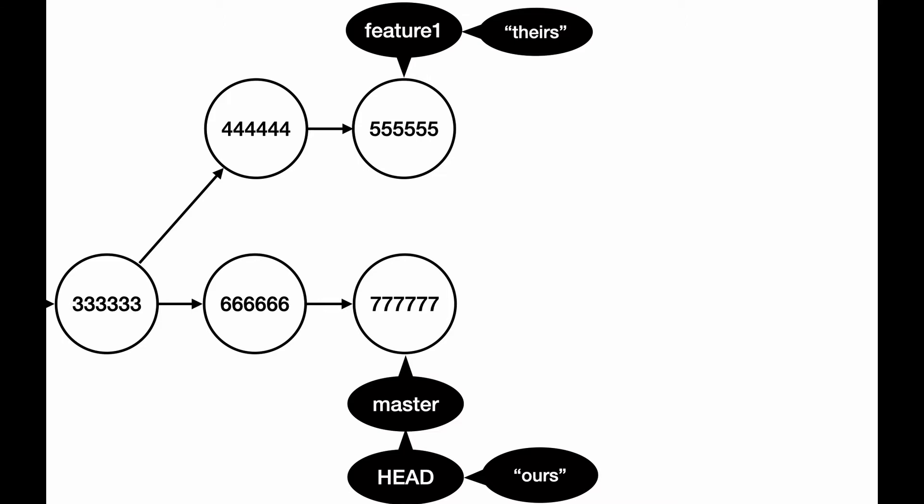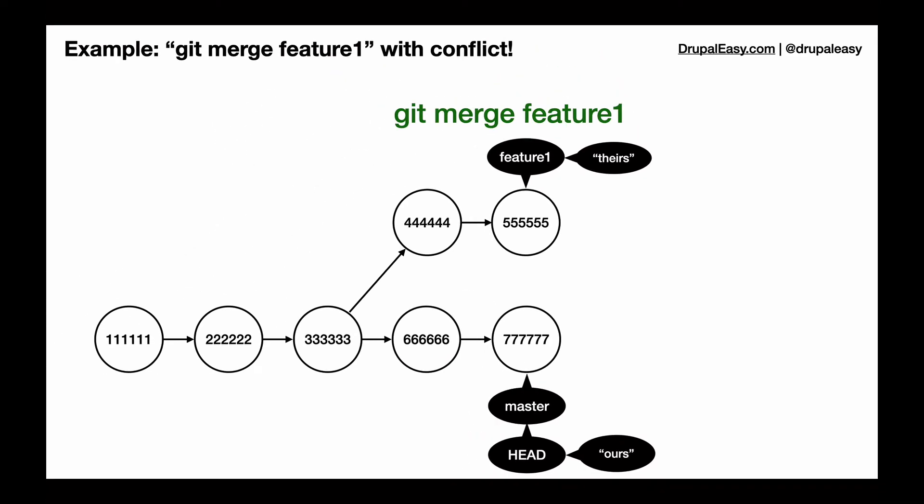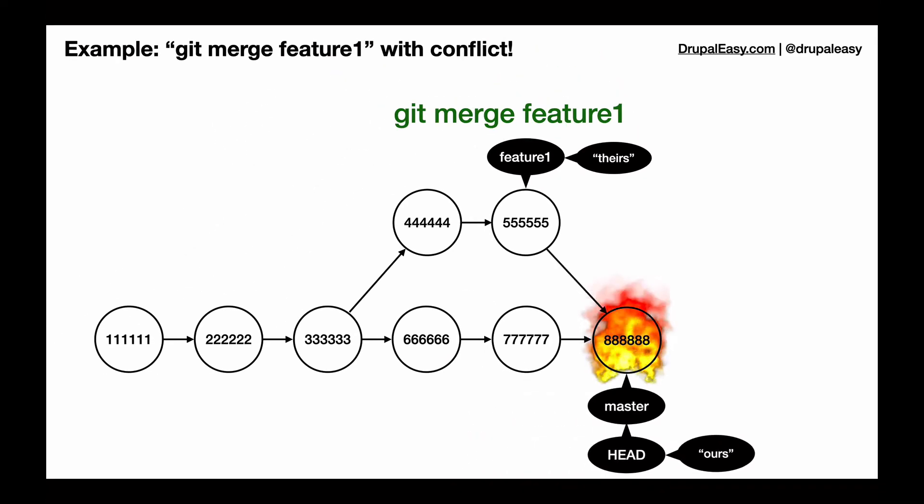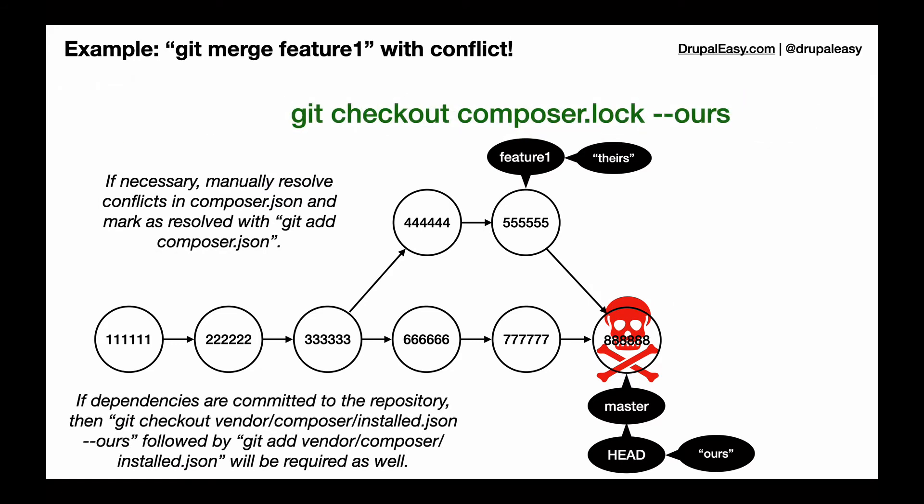So when a merge happens, the playhead doesn't move backwards like it does in a rebase, but basically git looks at the state of the code between, in this case, the 555 commit and the 777 commit, and will create a new commit that will try to rectify the changes in 555 and 777. In this case, it will not be able to do it. We will hit a code conflict because of that content hash.